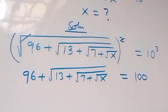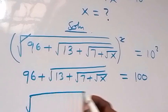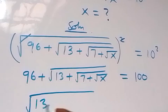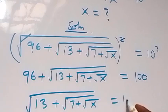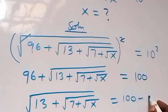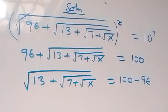Then in the next step, let's take 96 to this side, and this will mean square root of 18 plus square root of 7 plus square root of x now equals 100 minus 96, which gives us square root of 18 plus square root of 7 plus square root of x equals 4.